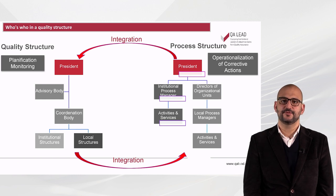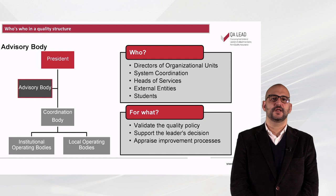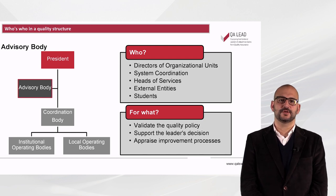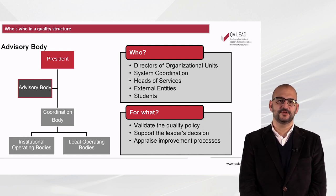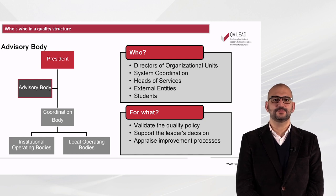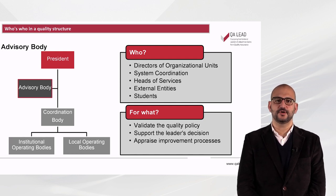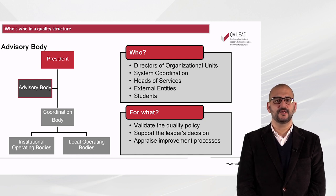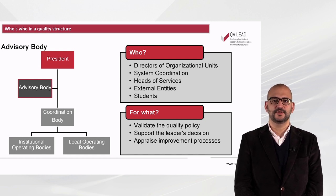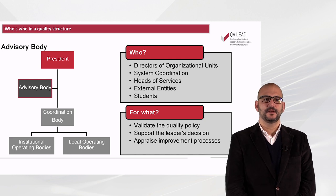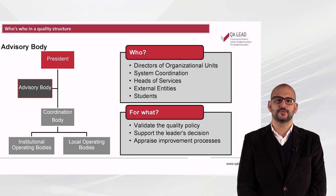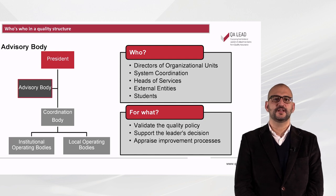At this point, it is important to conceive a perfect integration between these two structures so that the quality system is perfectly integrated in the institution's daily routine and, fundamentally, in the daily routine of each of the process managers. The advisory body is a solid support body in the decision-making process by the institution's leaders. This body could be composed by directors of organizational units, system coordination, heads of service, external entities, students, and other individuals. It will have the competence to, among other functions, validate the quality policy, support the leader's decision, and appraise improvement processes.